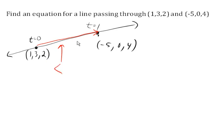So going from 1 to negative 5 is a decrease of 6 in the x direction. Going from 3 to 0 is a decrease of 3. Going from 2 to 4 is an increase of 2. And so the direction vector for the line is negative 6, negative 3, 2.